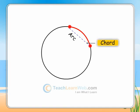A region in the interior of a circle enclosed by an arc on one side and a pair of radii on the other two sides is called a sector.